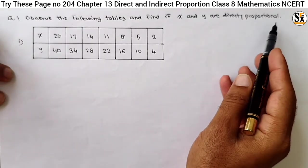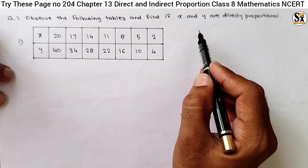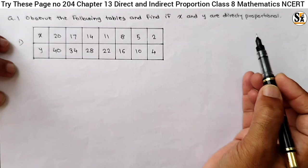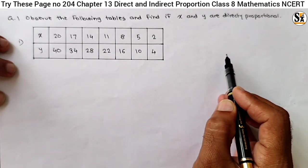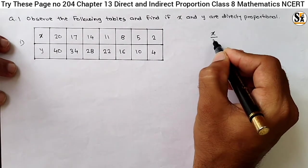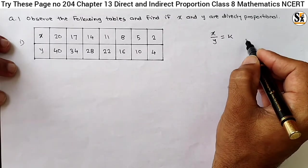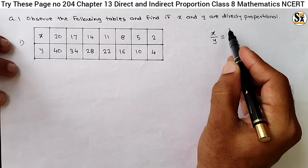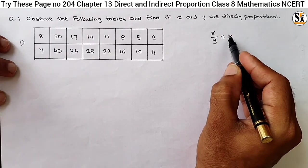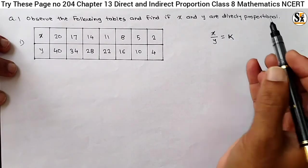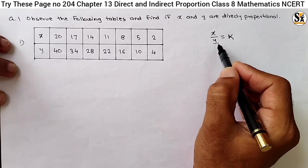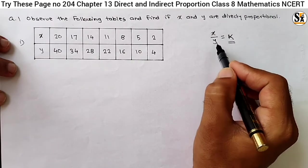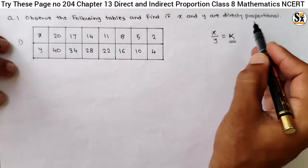What is direct proportion? The two quantities x and y are said to be in direct proportion if they increase or decrease together in such a manner that the ratio of their corresponding values remains constant. That means if x upon y is equal to k, where k is a constant and positive number, then x and y are said to be directly proportional. If x increases, y also increases, and this ratio will remain constant.